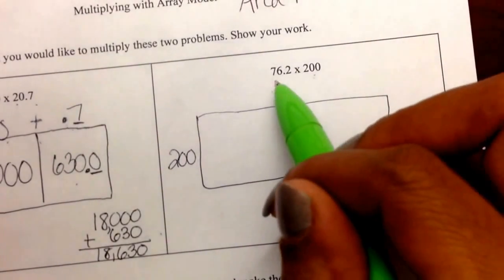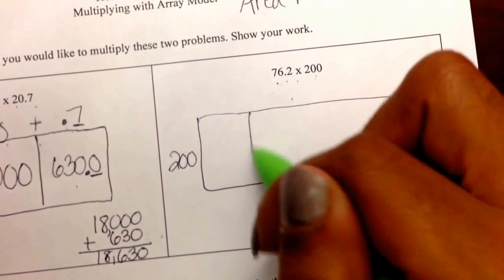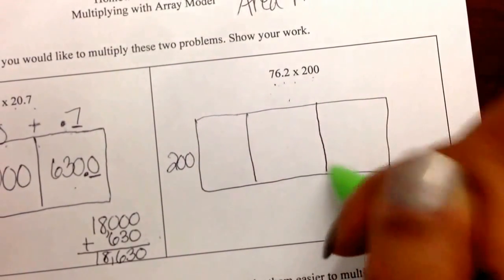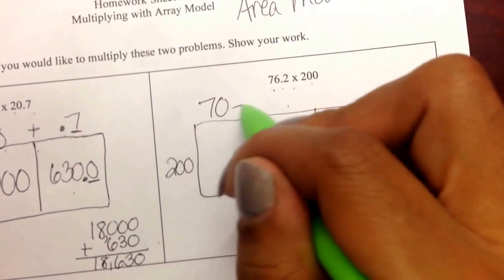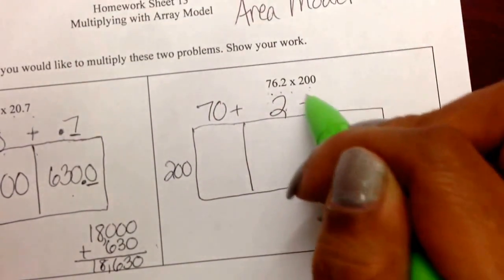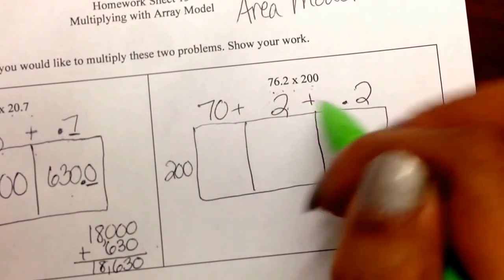I have 200, and I'm going to split this up into three friendlier numbers. I'm going to decompose 76 and 2 tenths into 70 plus 2 ones plus 2 tenths.